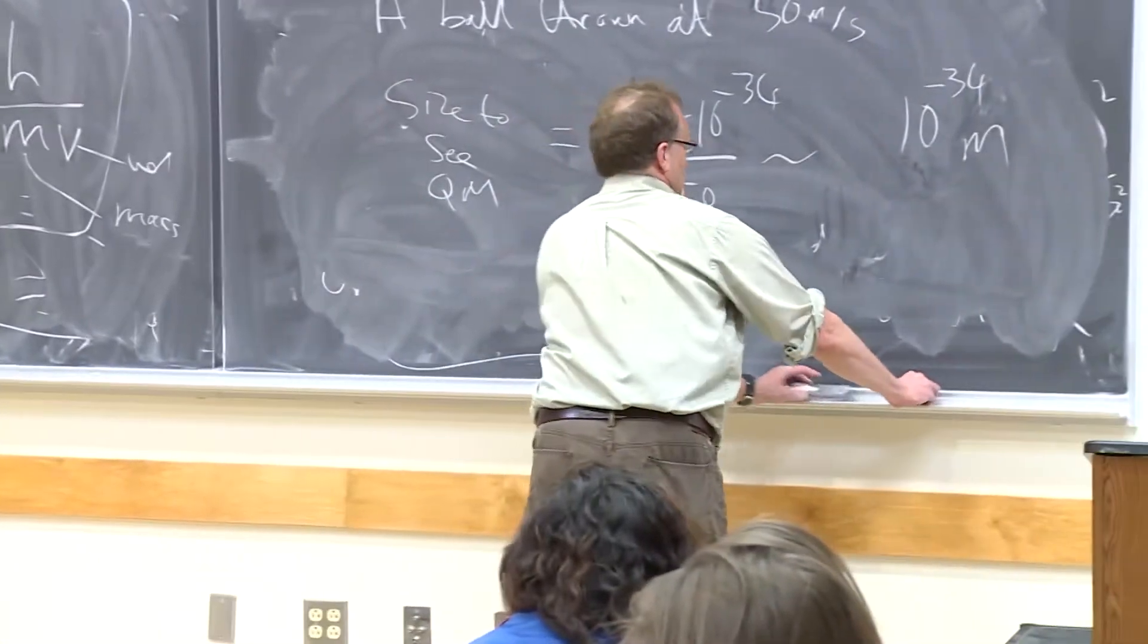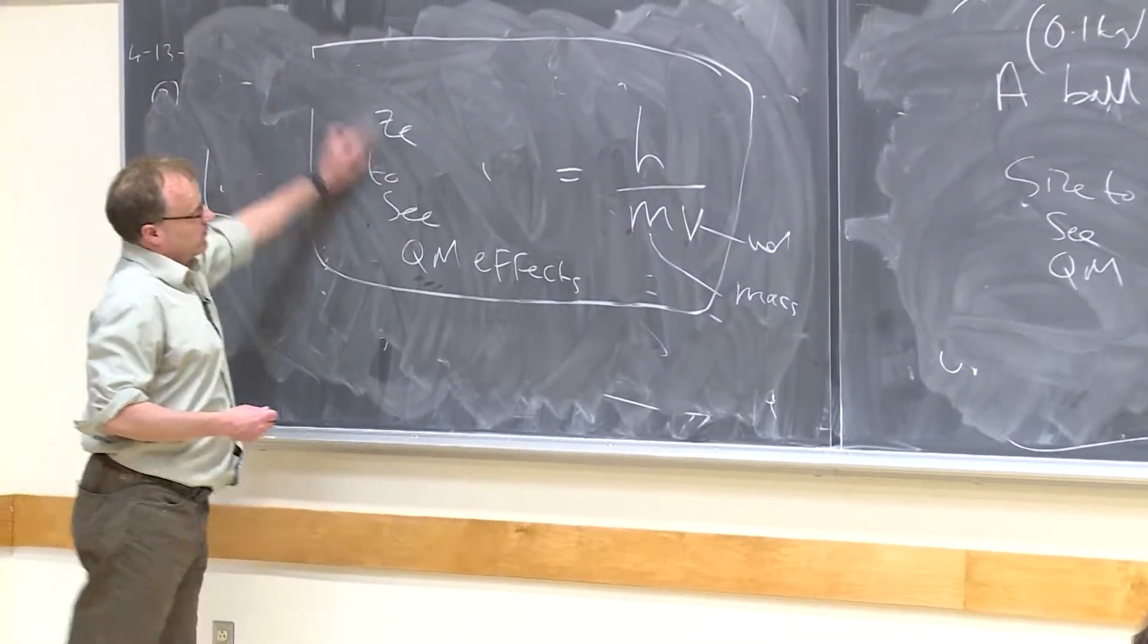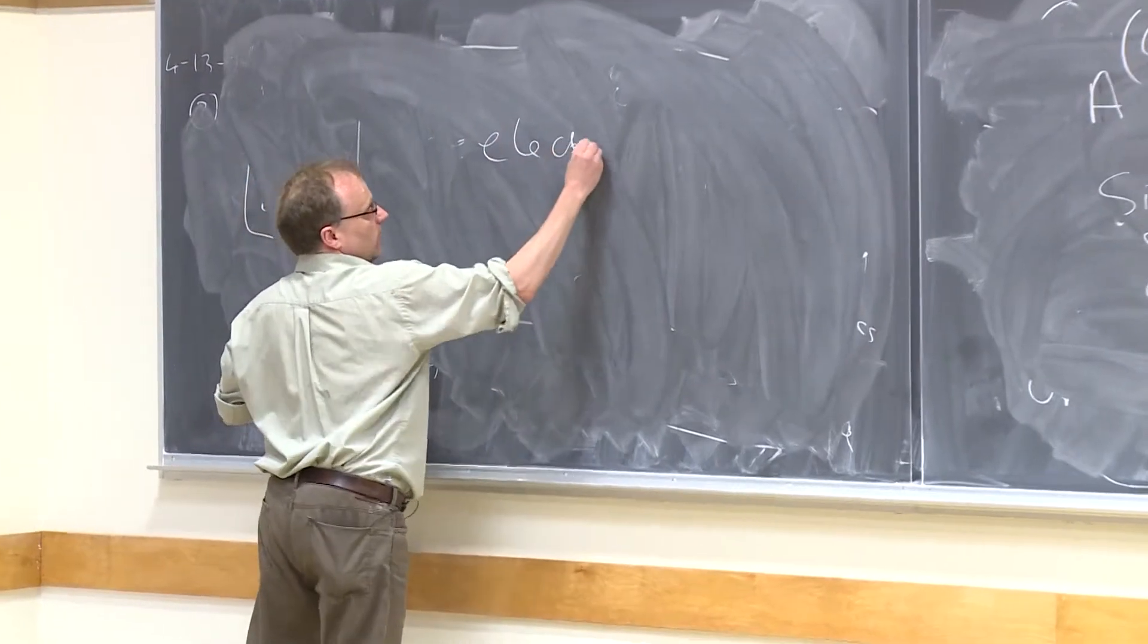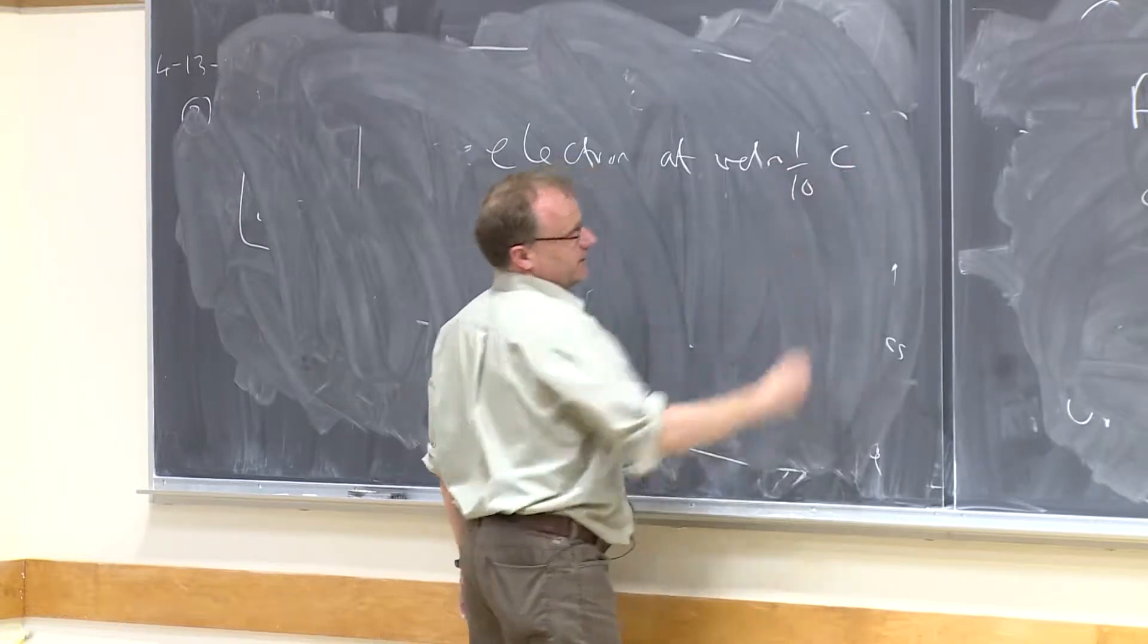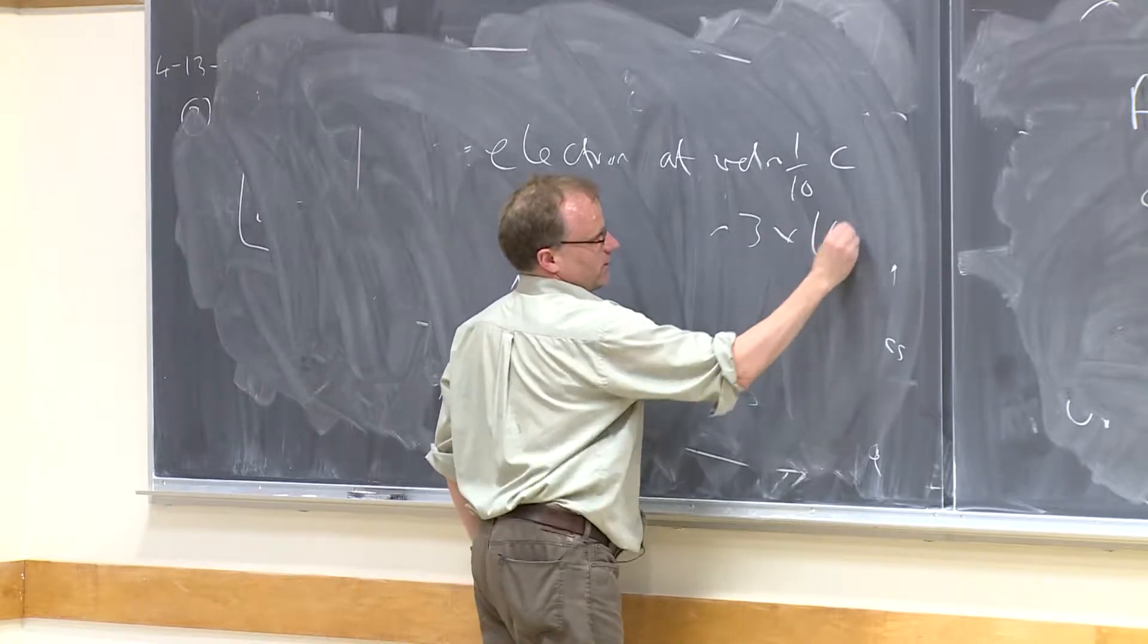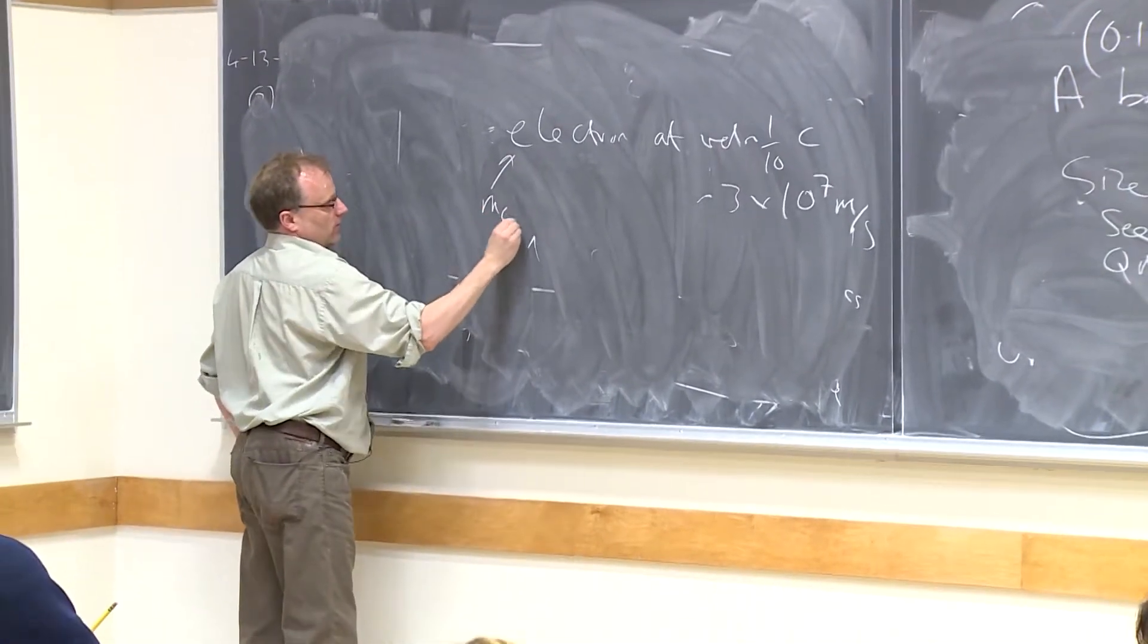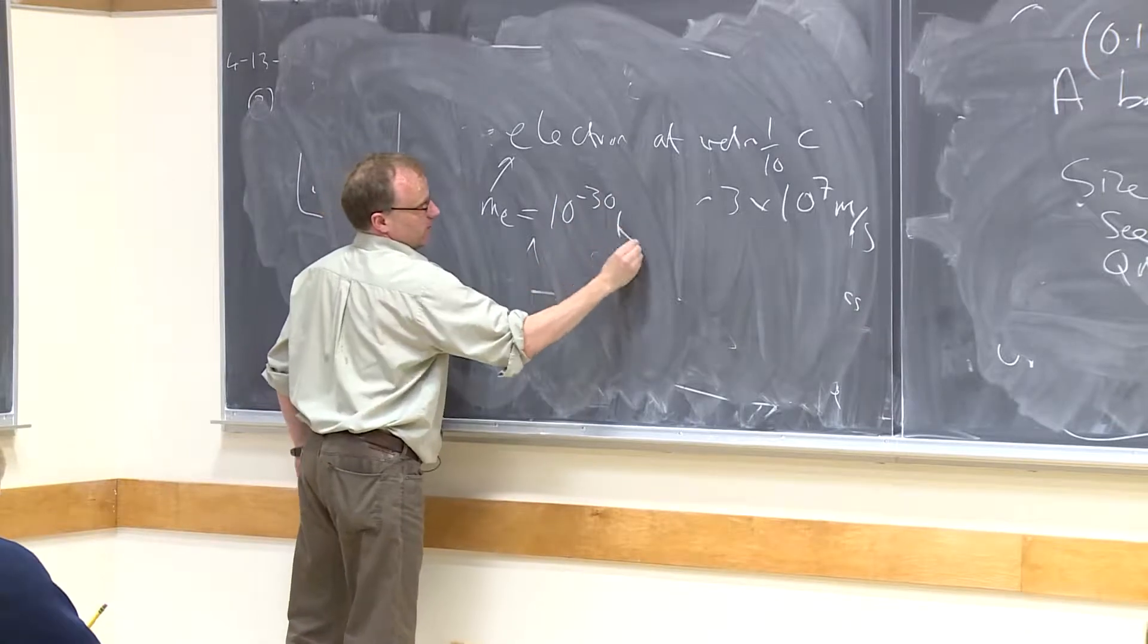But if you take something like an electron and you do the same formula, so let's say we have an electron at a velocity of about one tenth the speed of light, which is about 3 times by 10 to the 7 meters per second. And we know that an electron has a mass of about 10 to the minus 30 kilograms.